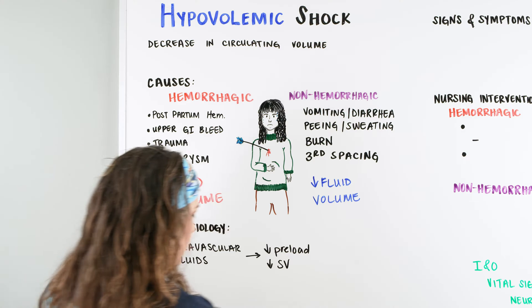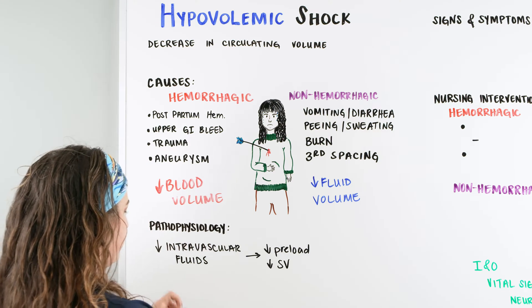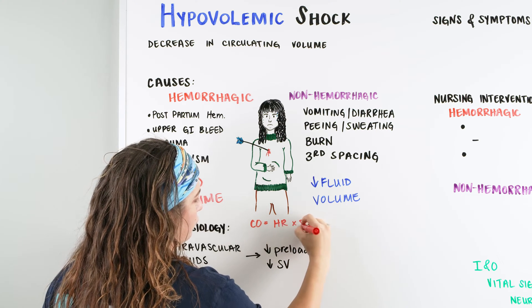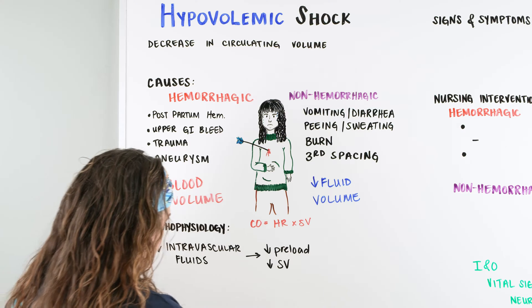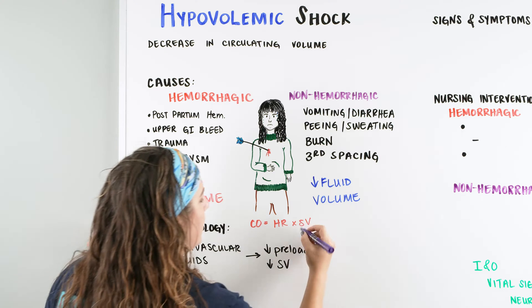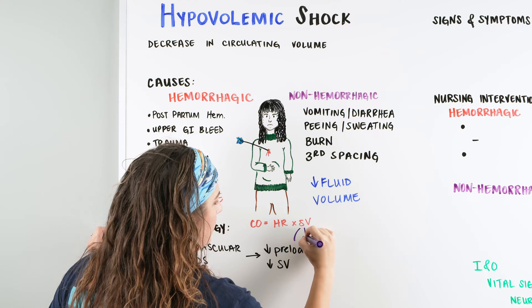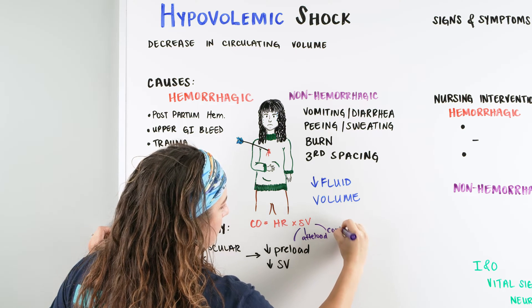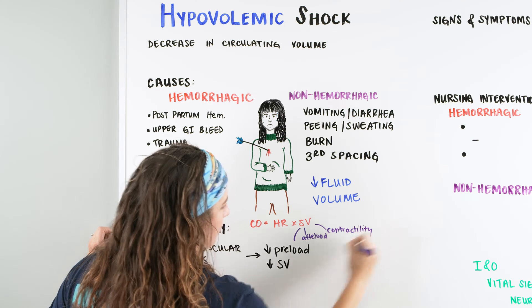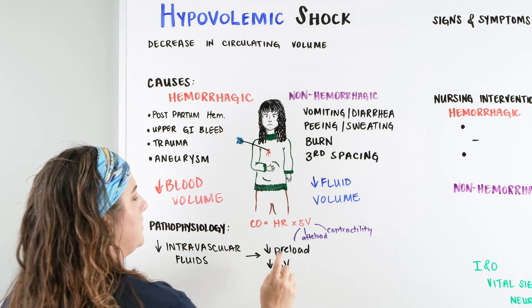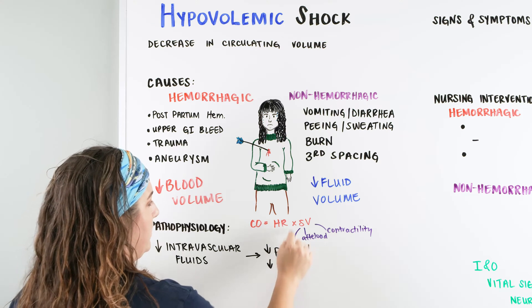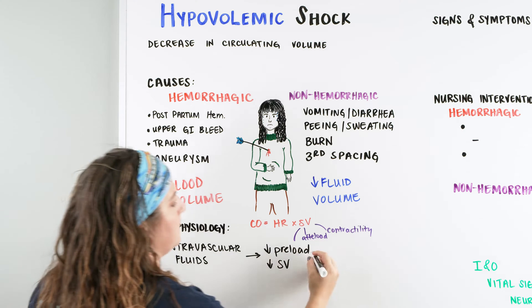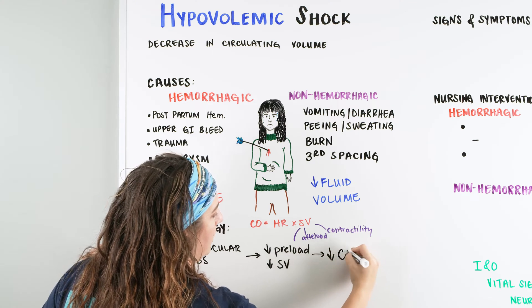If you remember, cardiac output is equal to heart rate times stroke volume. And we want to remember that our stroke volume can be broken into preload, afterload, and our contractility. So if we have a decrease in our preload, we're going to have a decrease in our stroke volume. If we have a decrease in our stroke volume, the next sequence would be a decrease in our cardiac output.